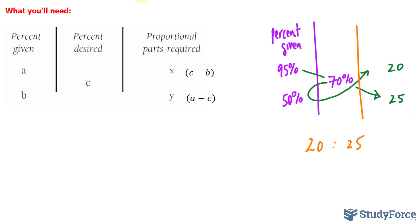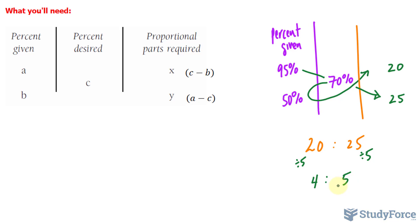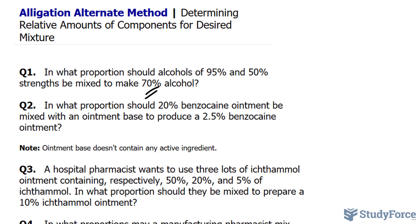Now you do want to reduce your ratio. What number divides into both 20 and 25? The number 5 works. So 20 divided by 5 makes 4, and 25 divided by 5 becomes 5. So 4 parts of A and 5 parts of B. That's the answer to question number 1.